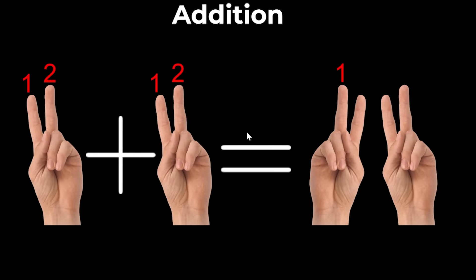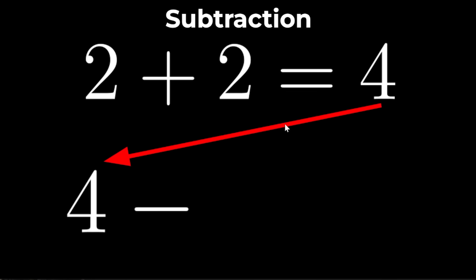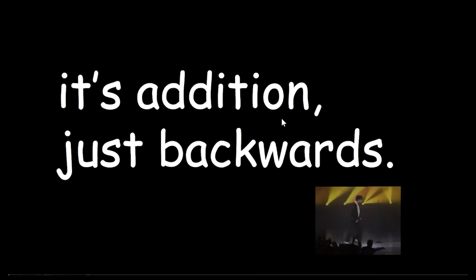Addition: 1, 2 plus 1, 2 equals 1, 2, 3, 4. Boom! Subtraction: If 2 plus 2 is 4 then 4 minus 2 equals 2. It's addition just backwards.